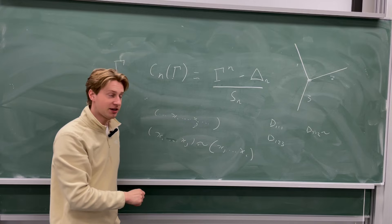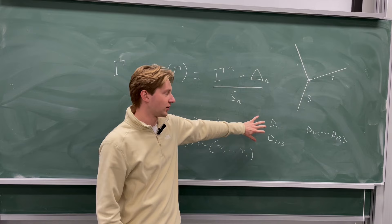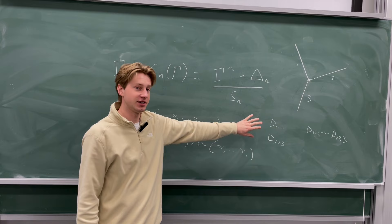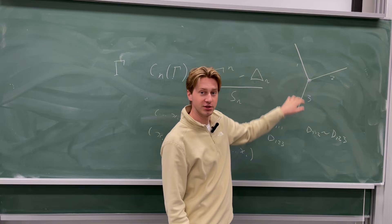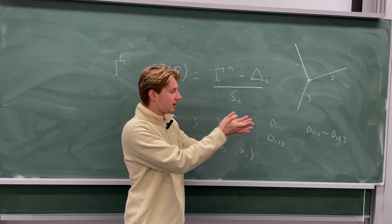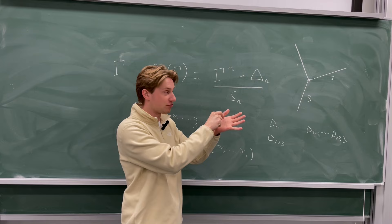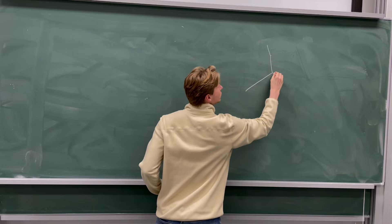The configuration space of n particles on the network consists of small regions describing particles on individual wires, glued together along their boundaries. For example, with three particles on a network of three wires, the configuration space includes a domain D₁₁₁ where all three particles are on wire one, a domain D₁₂₃ where the particles are on wires one, two, and three respectively. The condition on wave functions at the gluing points is precisely a Kirchhoff-type condition, as those points correspond to a particle moving from one wire to another.